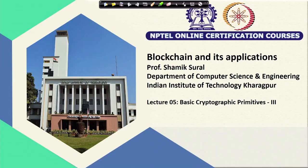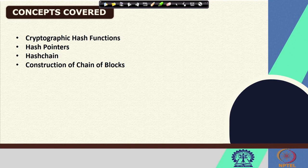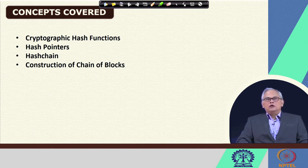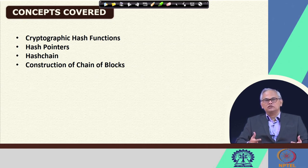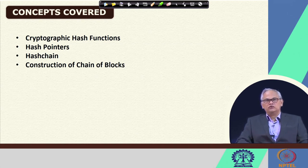Hello and welcome to this fifth lecture for our course on blockchain and its applications. Today's lecture is the third on the topic of basic cryptographic primitives. We will continue our discussions on cryptographic hash functions, look into hash pointers which are of real importance in blockchains, talk about the concept of hash chain, and see how a chain of blocks — in turn — is what a blockchain is and how to construct one.